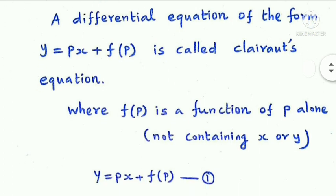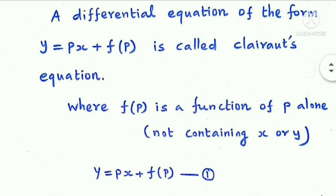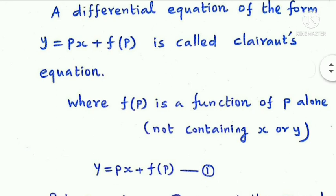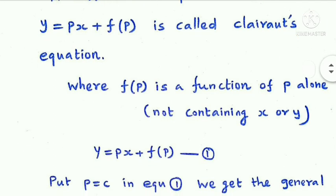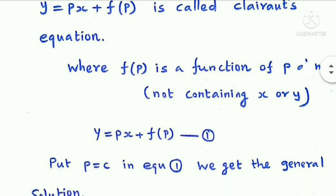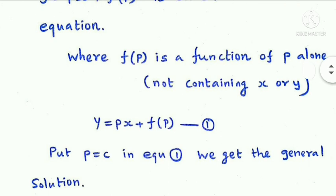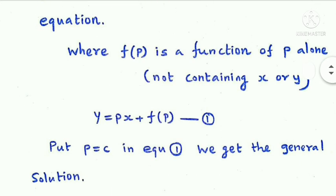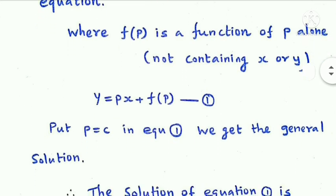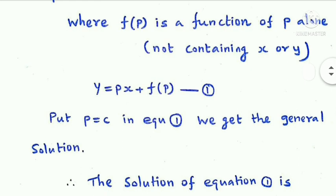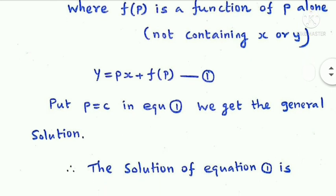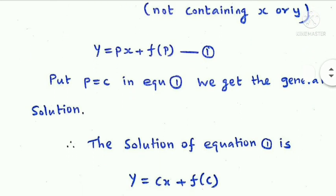For y = px + f(p), the general solution is obtained by putting p equal to c, giving y = cx + f(c).